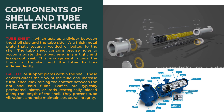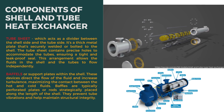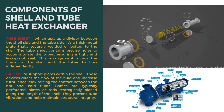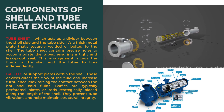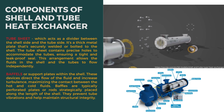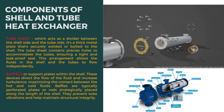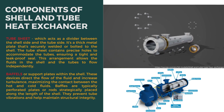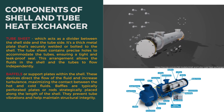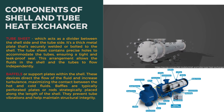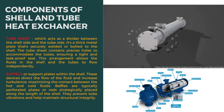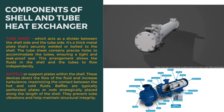The next crucial component is the tube sheet, which acts as a divider between the shell side and the tube side. It's a thick metal plate that's securely welded or bolted to the shell. The tube sheet contains precise holes to accommodate the tubes, ensuring a tight and leak-proof seal. This arrangement allows the fluids in the shell and the tubes to flow independently.